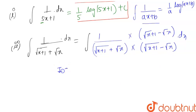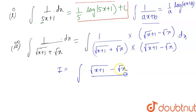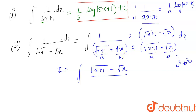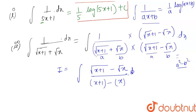After rationalizing, it becomes the integration of (√(x+1) − √x) divided by the denominator. Considering √(x+1) as a and √x as b, we apply the identity (a + b)(a − b) = a² − b². So the denominator becomes (x + 1) − x, which equals 1.